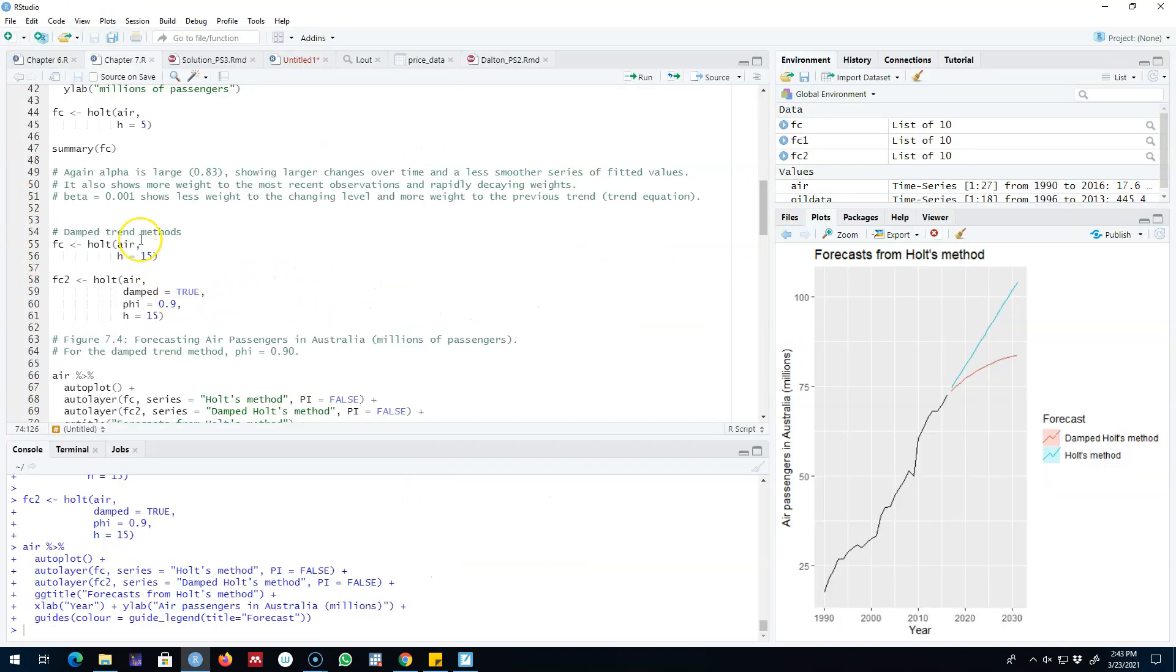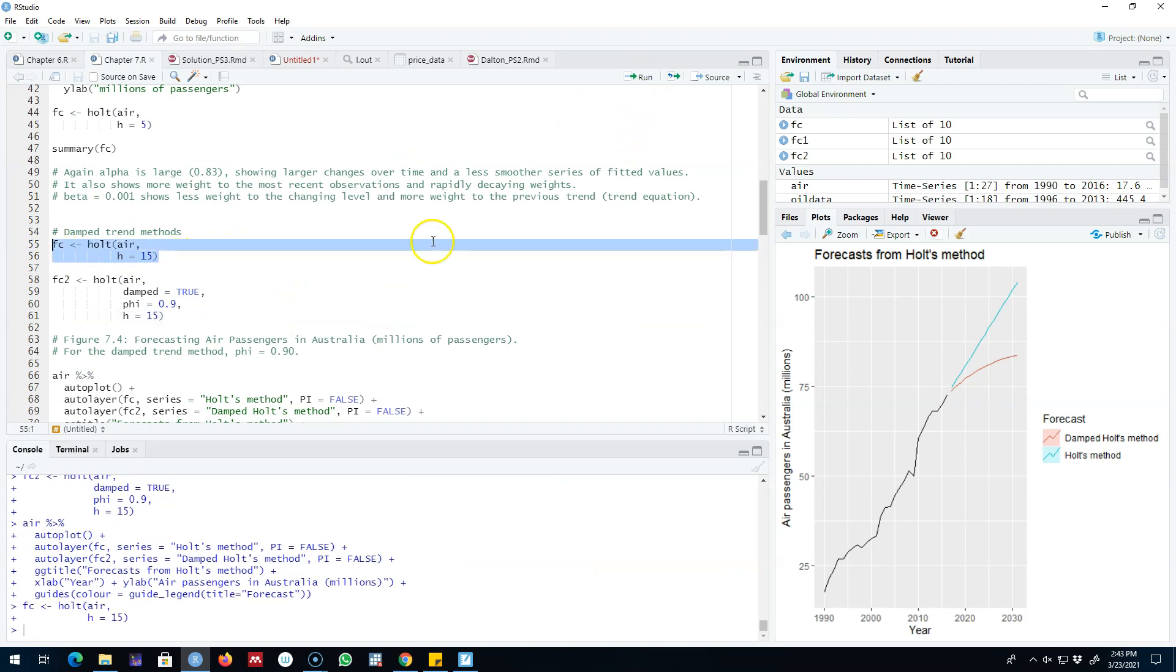So here is an example and we are going to use the same example as I used in my previous video. I'm going to introduce two types of equations here. I'm going to use a holt function, and my first argument will be our data. Our forecast horizon is 15 time periods in the future. Since this is air passenger data which is measured annually, this is our forecast for the next 15 years.